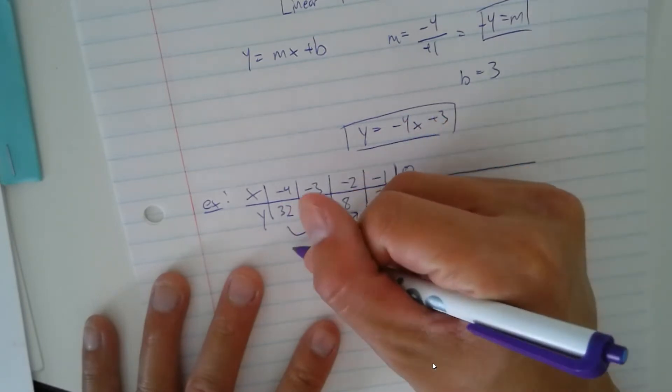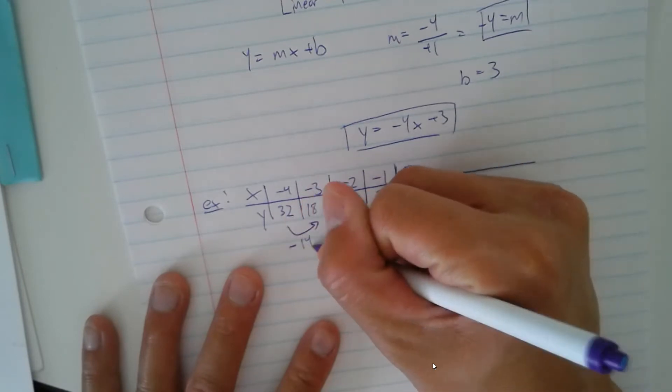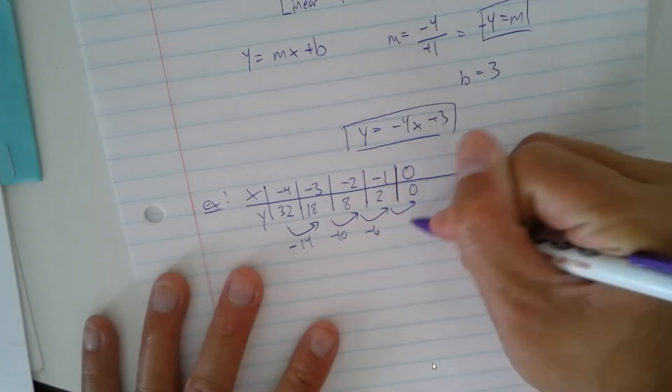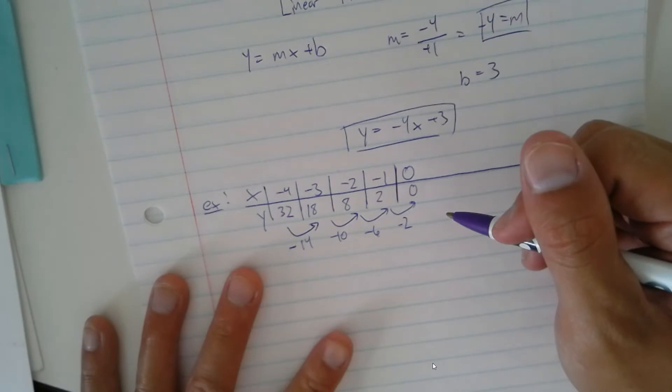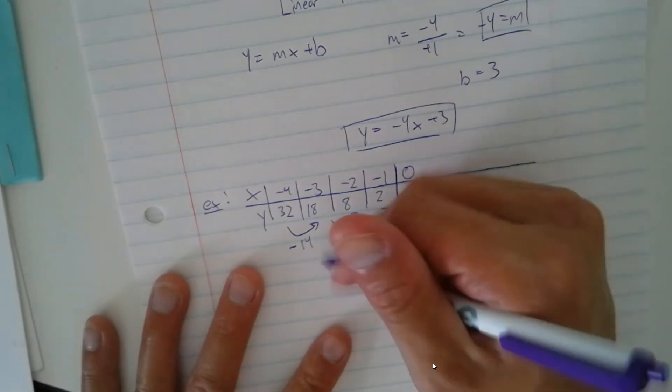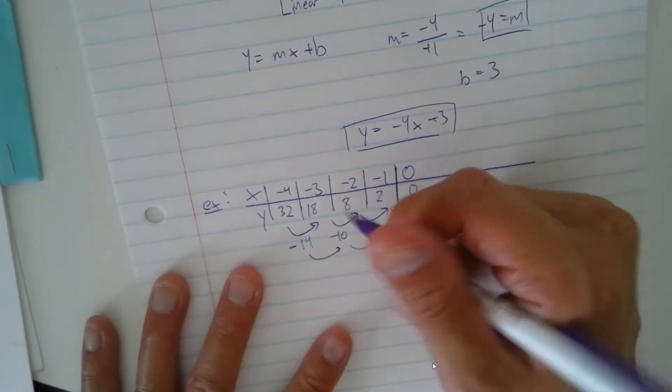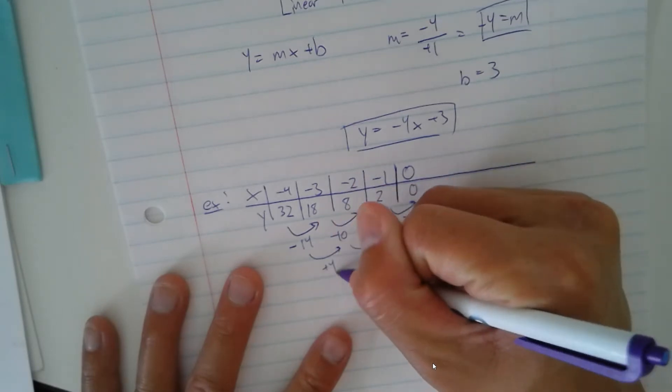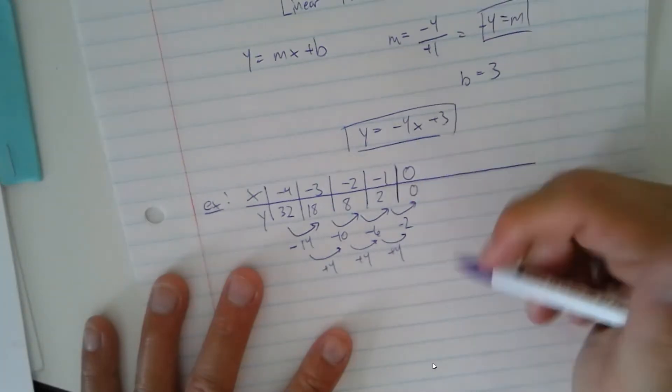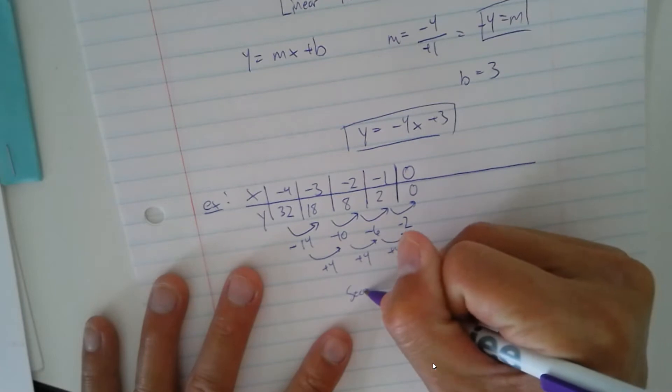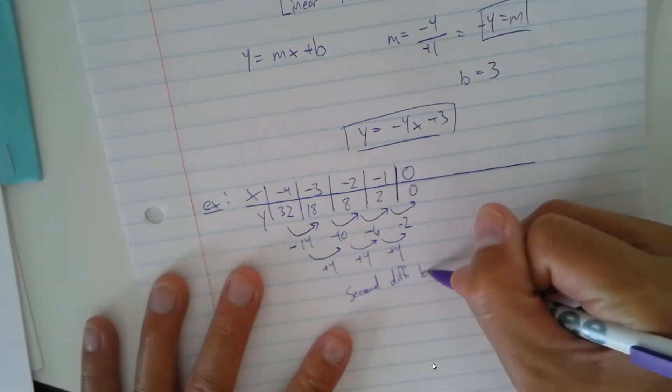This would be, I think this subtracts 14. This is a subtraction of 10, 8 is negative 6 and negative 2. Those are not the same differences. Let's go for the second one. It seems like negative 4 to negative 10 would be you added 4, this you added 4, then this you added 4. So it looks like the second differences test does pass. Second differences test passes.